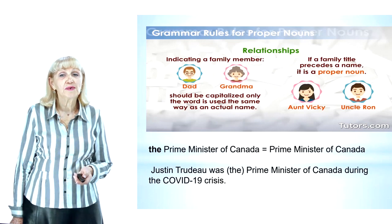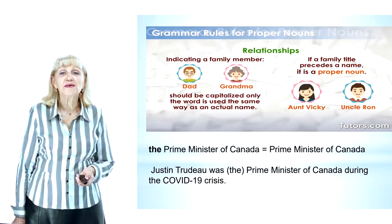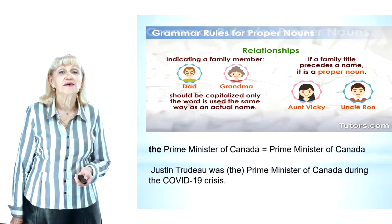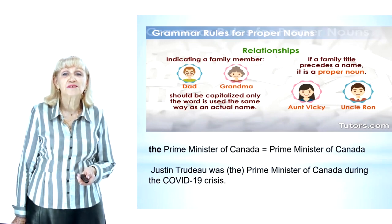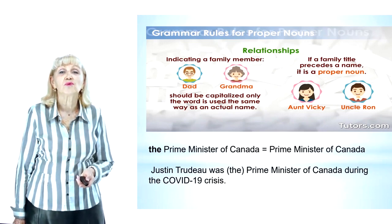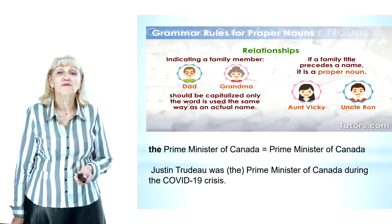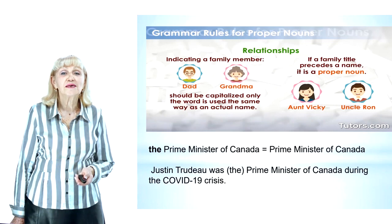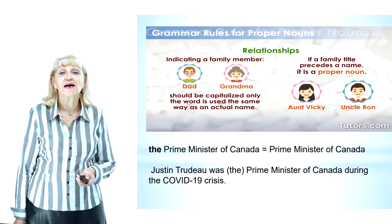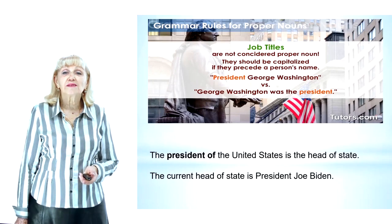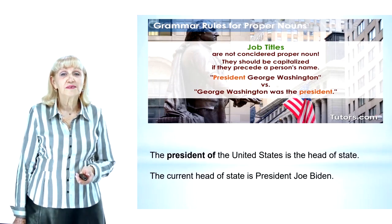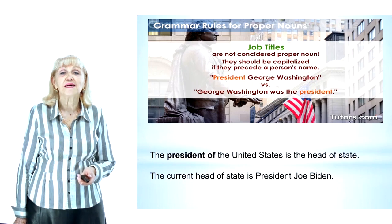In the case of official job titles, the article is usually dropped if there is only one such incumbent — given that only one person holds this position at a time. For example: Justin Trudeau was the Prime Minister of Canada during the COVID-19 crisis. Margaret II, the Queen of Denmark. However, persons and unique things or ideas are identified by their names. For example: the Empire State Building. Job titles are not considered proper nouns; however, they should be capitalized if they precede a person's name.